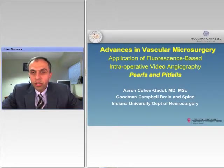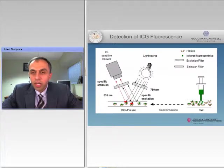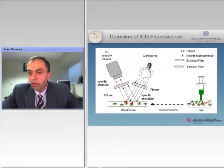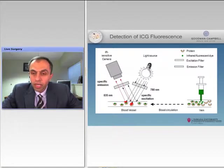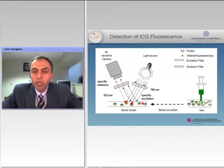We'll start with a description of the disclosure, none of which really interferes with the presentation this evening. The basic mechanism of ICG is that we inject the dye into the vessel — the anesthesiologist usually does that — and it binds to some of the proteins in the vessel. Eventually, as the blood reaches the brain or the area of surgery, the light from the microscope causes a special camera to only see the vessels, which is really an intraoperative angiogram through the microscope, only lighting up the vessels and nothing else.